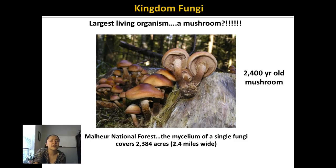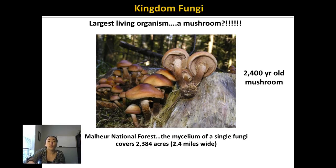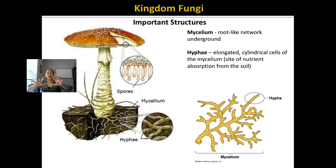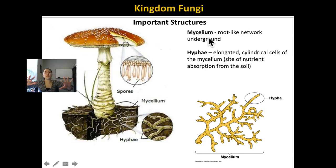You might wonder how a mushroom can be 2.4 miles wide. Most of a mushroom's life is spent underground — whenever you see the caps coming up, those are actually just reproductive structures. Whenever a mushroom's not reproducing, it spends its entire life underneath the soil. Most of a mushroom exists as a root-like network underneath the soil, called mycelium. The mycelium increases the surface area for them to absorb nutrients from the environment. The mycelium or root-like structures are made up of tiny little cells called hyphae, and this is where nutrients are absorbed from the soil.